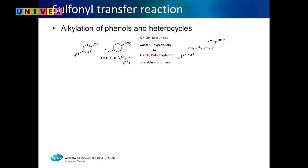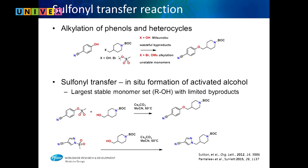This one is called mesylate transfer or sulfonyl transfer. If you wanted to alkylate a phenol using a Mitsunobu reaction with triphenylphosphine, there are lots of byproducts and it's hard to clean up. If you make the bromide or mesylate of the alcohol, those are unstable for storage — they may degrade before you can use them. So folks at Pfizer developed mesylate transfer, where you put the mesylate on the starting phenol and use the alcohol as your monomer instead of a bromide.